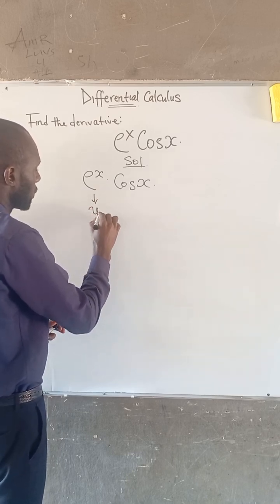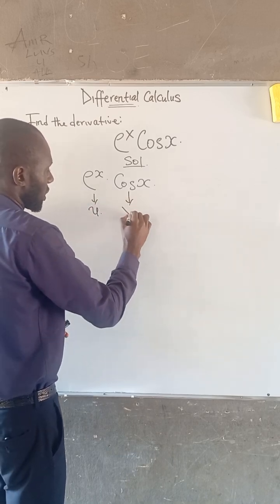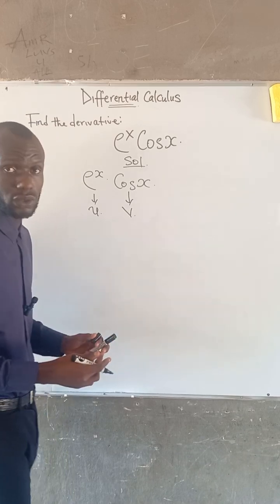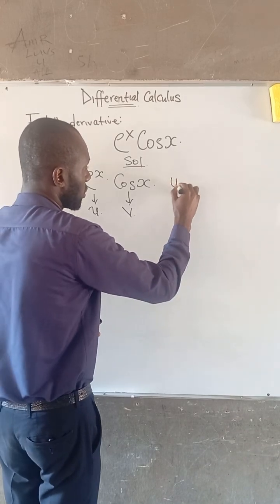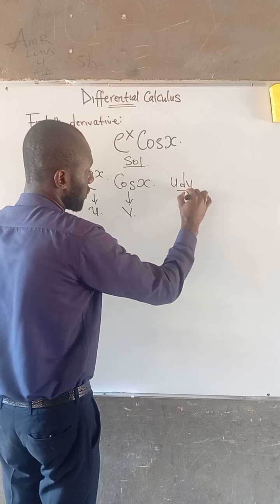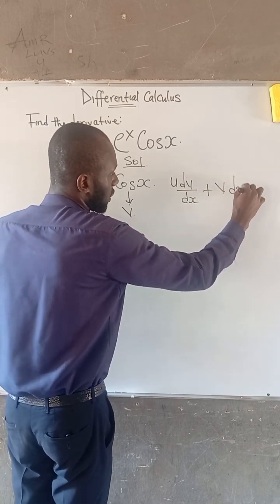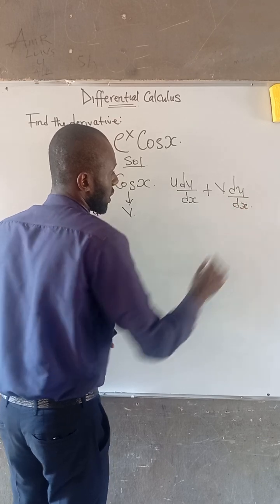So let's call here u and then let's call here v. Note that the formula for the product rule is given as u dv over dx plus v du over dx.